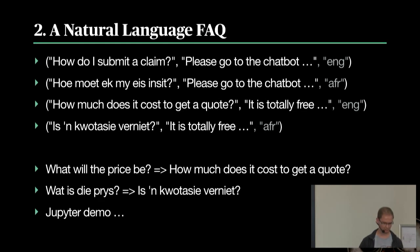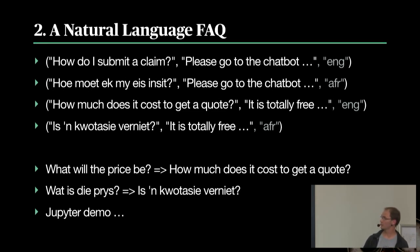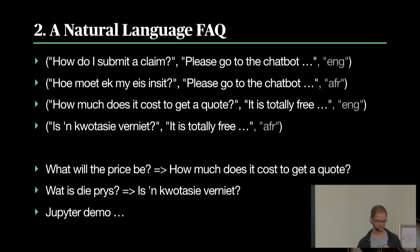If you give questions to the FAQ system — for example 'how do I submit a claim?' — it matches to some answer. You can do the same in a different language. I can validate Afrikaans and English quite easily; for some other languages I can't validate myself, so if anyone in the audience speaks our local languages and is interested in NLP, please come and talk to us. For instance, 'what will the price be?' matches to 'how much does it cost?'